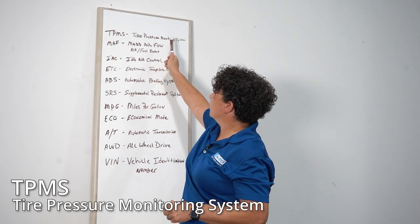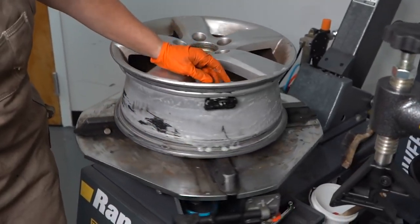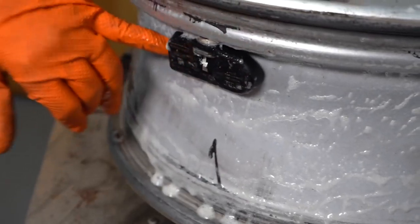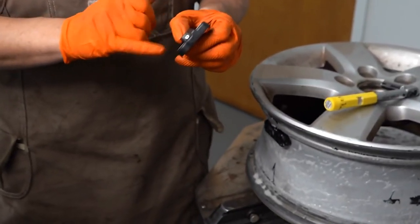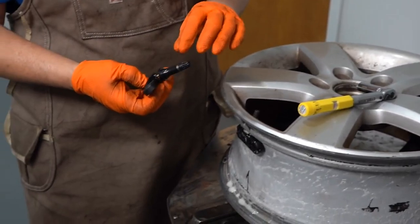TPMS stands for Tire Pressure Monitoring System. That is what runs in everybody's tires — the little sensors that tell you the tire pressure instantly. It's activated by magnets and it runs to the PCM, which knows what the pressure is supposed to be. It gives a little window, whether it's negative five or negative three PSI, and when it goes below that, your light comes on.